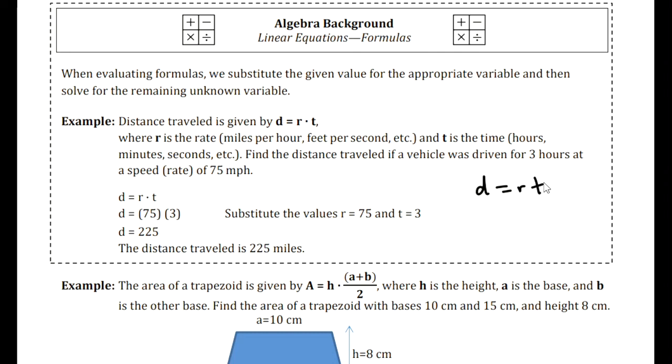So for example, let's say a car drives for three hours at a speed of 75 miles per hour. For the rate we'll put in 75 miles per hour and then for the time we'll put in three hours. 3 times 75 is 225, and this is measured in miles.